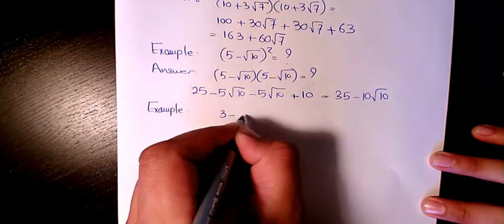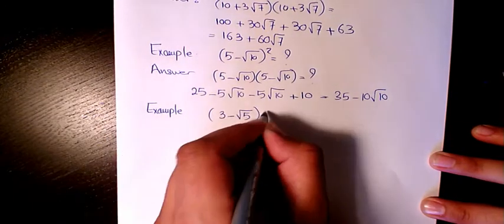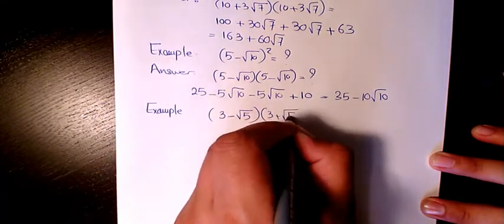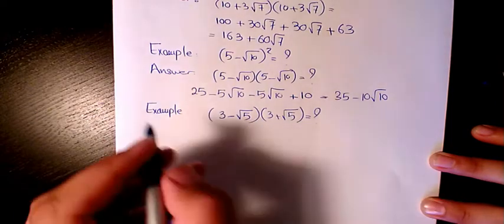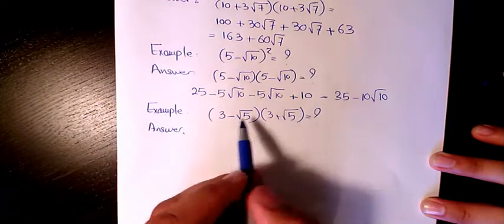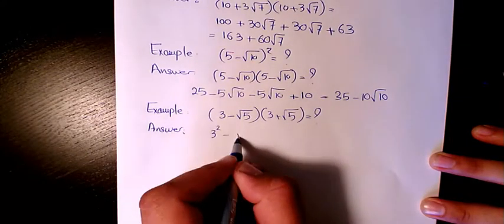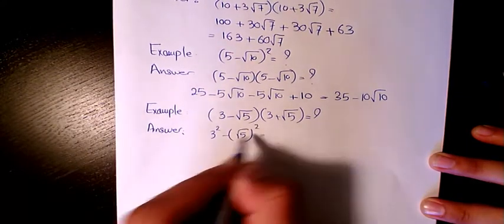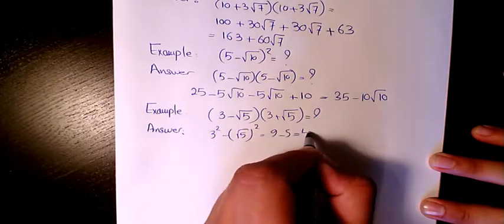Next example: (3 - √5) times (3 + √5). Answer is, I can use difference of squares, so it's going to be 3² minus √5². So it's going to be 9 minus 5 equals 4.